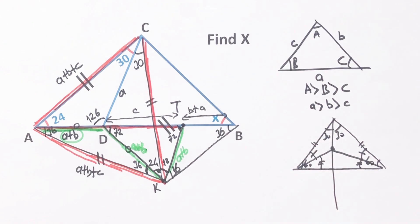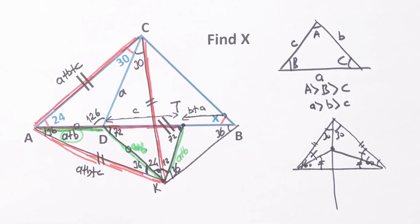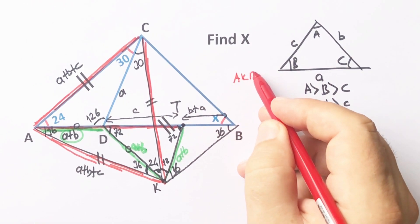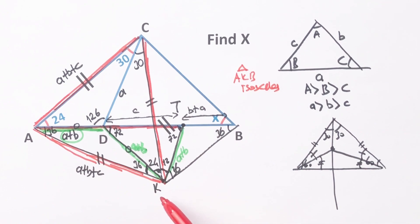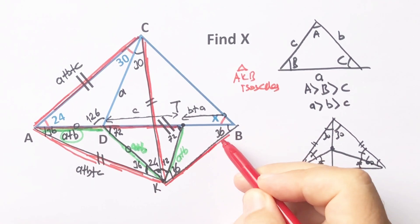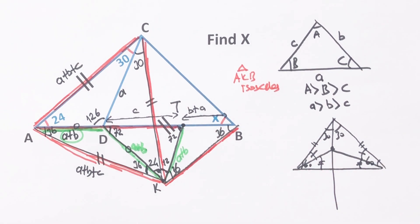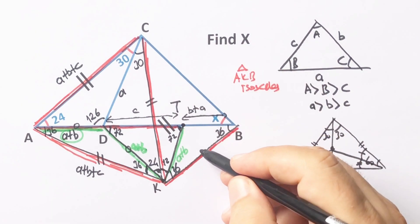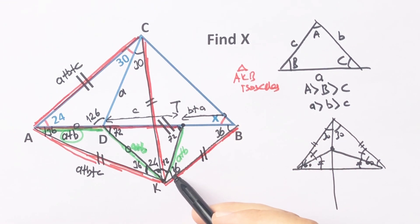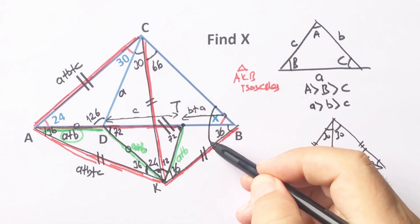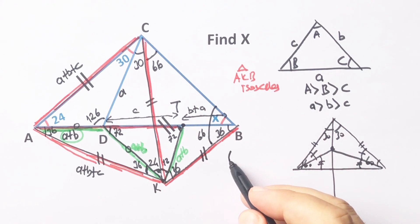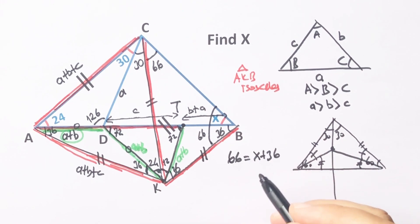If you focus on triangle AKB: triangle AKB is congruent to triangle CT. Therefore AK must equal KB, and KB must equal KC. So triangle CKB is an isosceles triangle, meaning here must be 66 degrees and this angle is also 66 degrees. Therefore 66 equals x plus 36, so x equals 30 degrees.